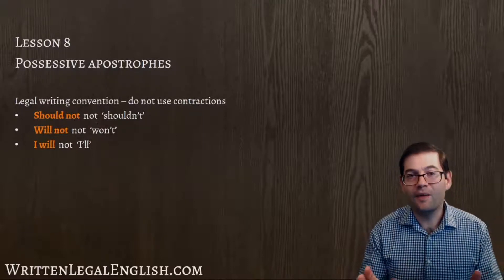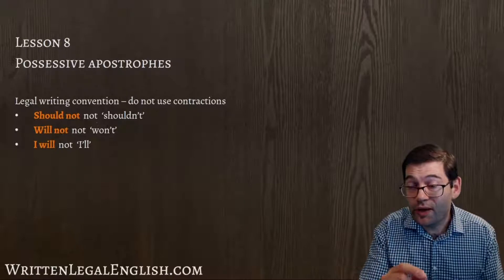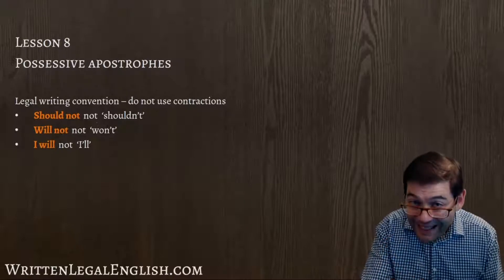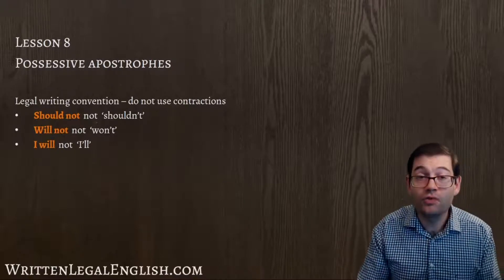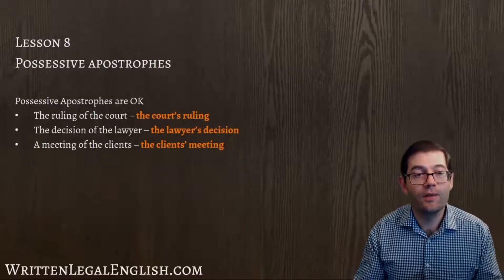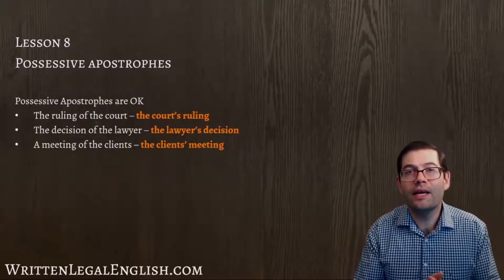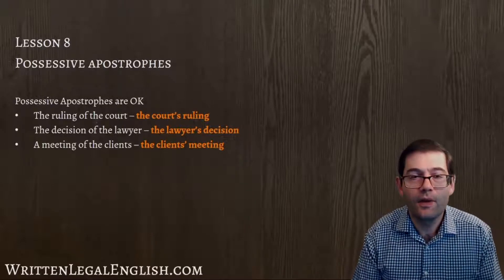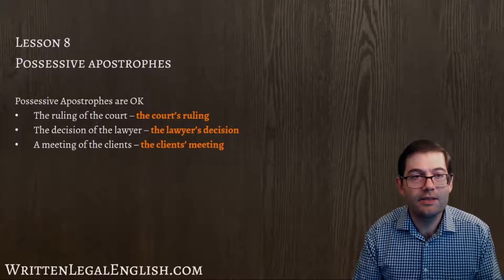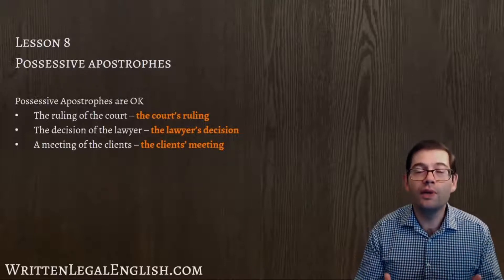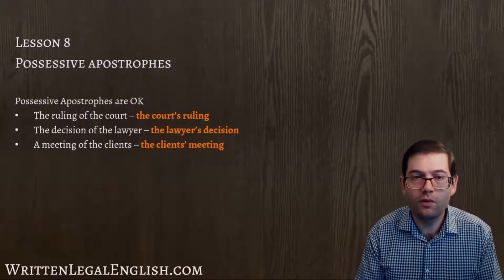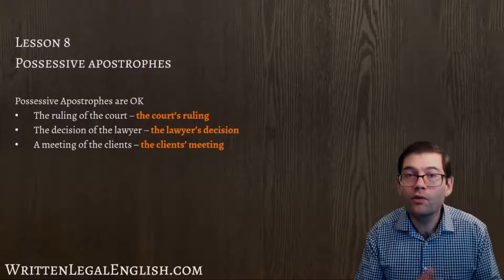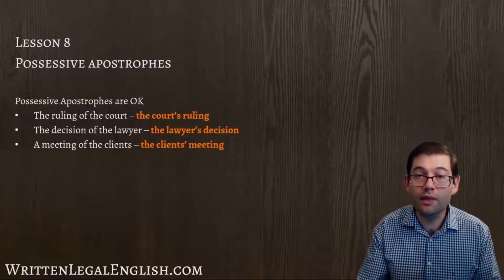However, there is one contraction we can use, and that contraction is formed when we use possessive apostrophes. For example, you might see a sentence that says 'the ruling of the court'. Here, we can say 'the court's ruling'.